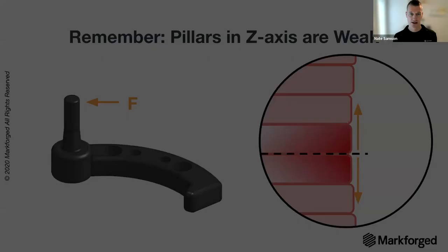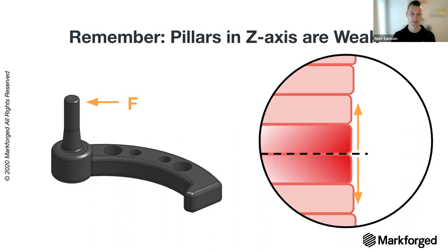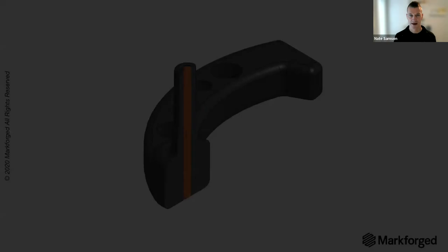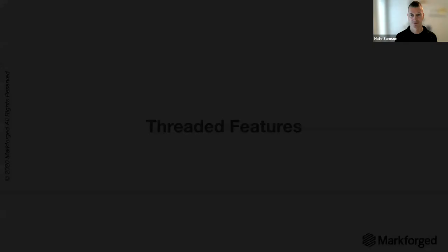Thin pillars present a Z-strength challenge. If a part has failed across Z layers, that is the weakest part of a print. The arm of a structure could be completely reinforced with carbon fiber — getting strength of aluminum — but the pillar will be significantly weaker. The solution: use simple DFAM to design in a through-hole that will accept a dowel pin. Now you have the strength of steel in the pillar, locked into the continuous fiber reinforcement of the rest of the arm — an extremely robust metal replacement part.